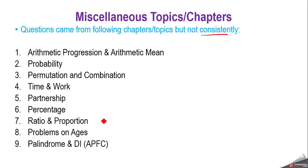Problems on ages — we also got questions from this chapter. Some miscellaneous topics like palindrome (a number which when read from front and back remains the same), data interpretation in APFC examination, and questions based on integers such as 'from 1 to 100 how many prime numbers' or averages of prime numbers. But remember, these topics have not been repeated consistently — we see only a few instances.